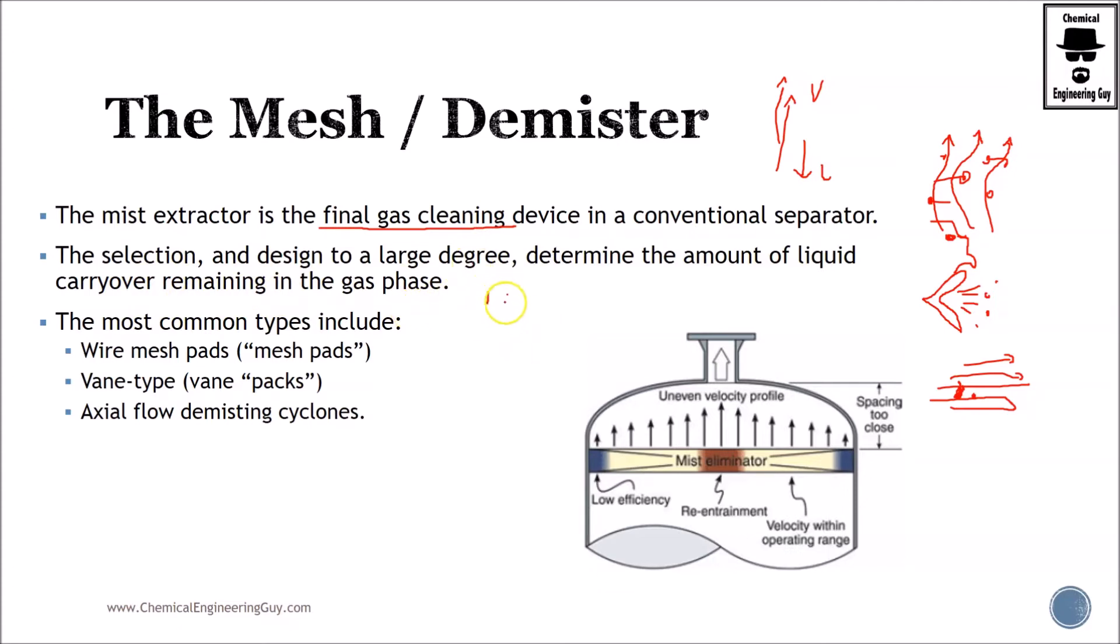If you have something around 1%, maybe you don't need a very complex mist extractor. But there are cases so extreme that you may have even 3%—not composition, but 3% in the flow rate or volumetric flow rate—you will encounter some liquids.